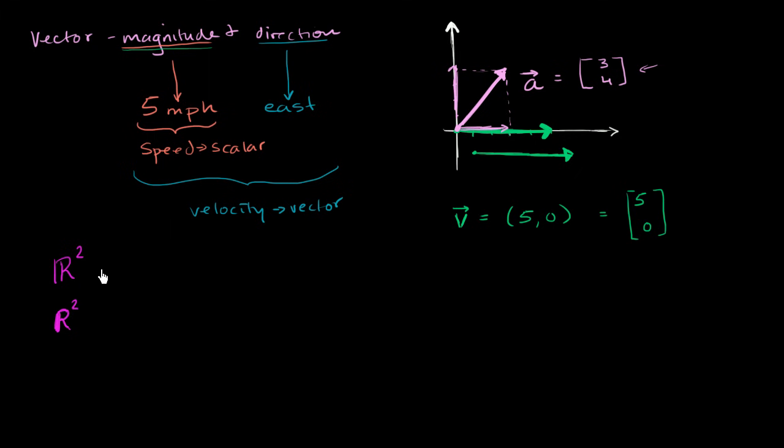And if you see this, they're referring to the two-dimensional real coordinate space, which sounds very fancy. Real coordinate space. But one way to think about it, it's really just the two-dimensional space that you're used to dealing with in your coordinate plane.